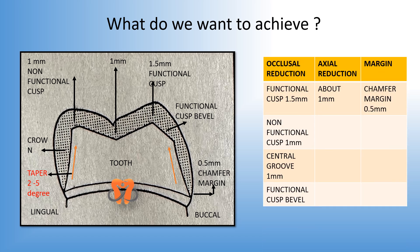When we do occlusal reduction, we reduce the functional cusp area by around 1.5 mm, the central groove area by 1 mm, and the non-functional cusp by another 1 mm. The axial reduction is done by 1 mm, and we give a taper of 2 to 5 degrees. Also, for the functional cusp, we give the functional cusp bevel. The chamfer margin has a depth of 0.5 mm. Now all this reduction is guided by the principles of tooth preparation, which we will be discussing further in our lecture.